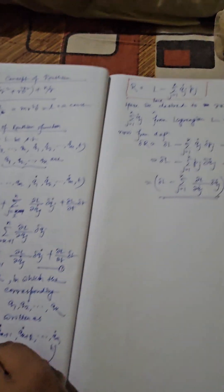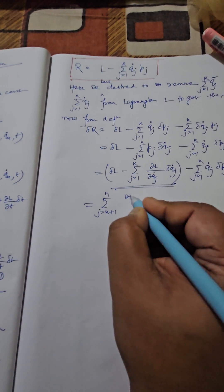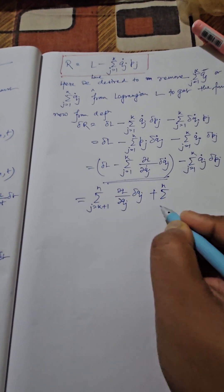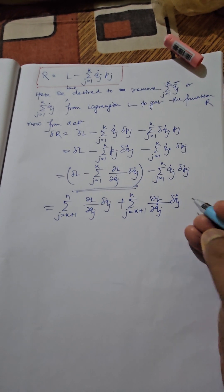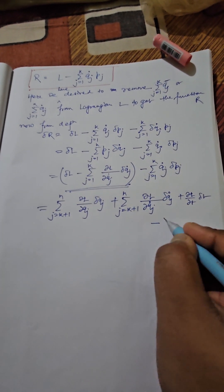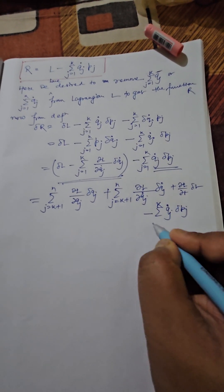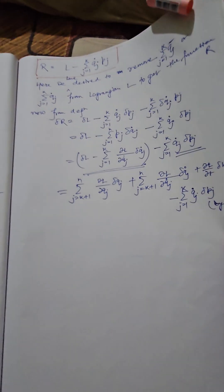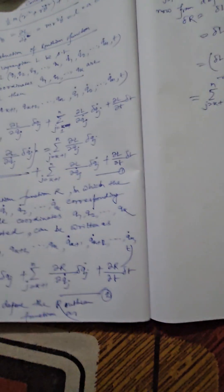Substituting, we get: variation of R = summation over j from k+1 to n of (del L / del qj) delta qj, plus summation over j from k+1 to n of (del L / del qj-dot) delta(qj-dot), plus (del L / del t) delta t, plus qj-dot delta(pj) for j from 1 to k. This is equation 3.